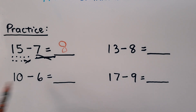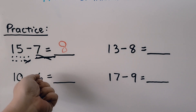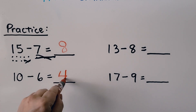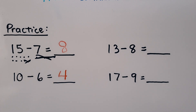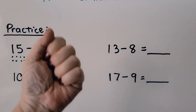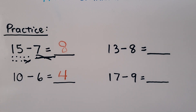For 10 minus 6, we could think of a related addition fact: 6 plus what number equals 10? We can start at the subtrahend 6 and count up to 10: 7, 8, 9, 10 — that's 4. And 6 plus 4 is equal to 10. For 13 minus 8, we can start at 8 and count up to 13: 9, 10, 11, 12, 13 — that's 5. And 5 plus 8 is equal to 13.